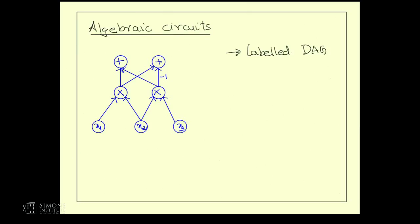When you want to compute polynomials and you're looking at algorithms, what are the most natural algorithms? Well, polynomials are defined using sums and products, so you think about algorithms that use sums and products to compute them. This is what an algebraic circuit is — just like a Boolean circuit, which we've seen a few times already, only instead of ANDs and ORs, we have sums and products.